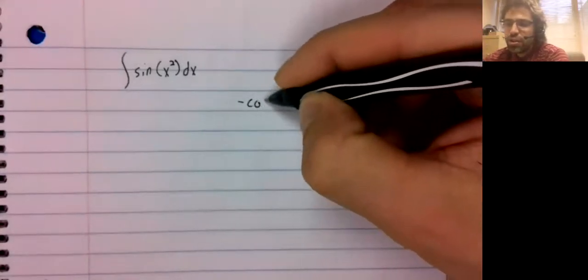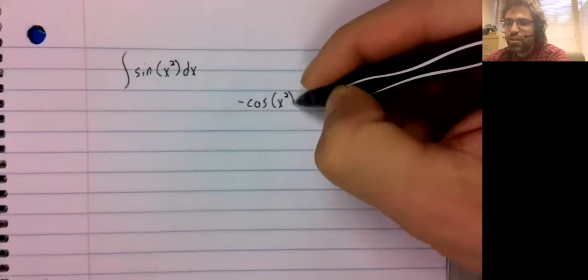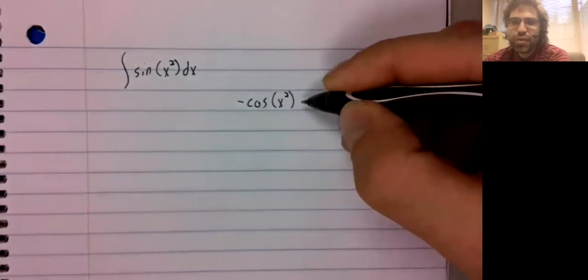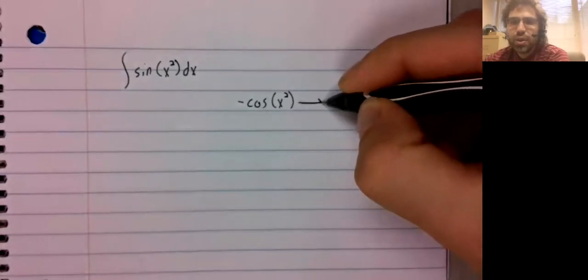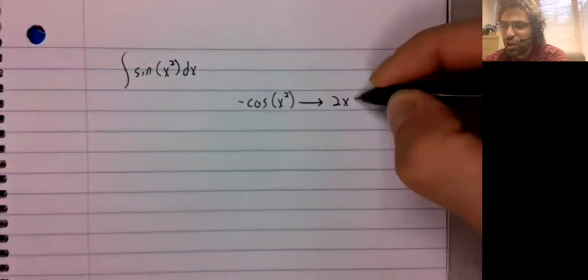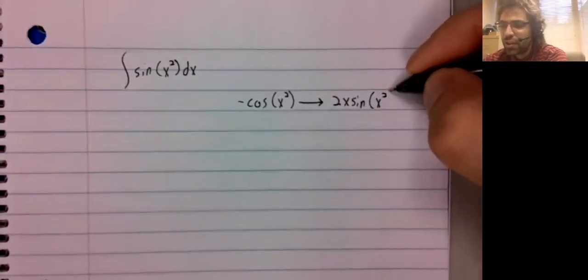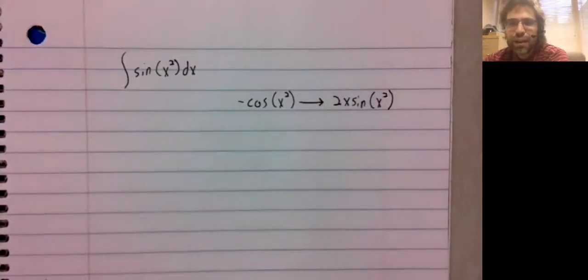The antiderivative of the sine is the negative cosine. But if you take the derivative of this, you do not get the sine of x squared, you get 2x times the sine of x squared.